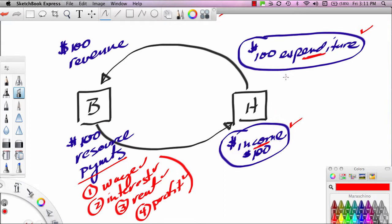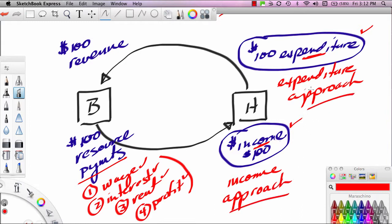So there's two ways the government can attack, if you will, GDP. One approach is called the expenditure approach. Value output on the basis of what the final consumer paid for it. A second approach is the income approach. Value output on the basis of what businesses paid out to make it. Okay? So the expenditure approach and the income approach. And of course, at least in theory, those two approaches should yield the same number.